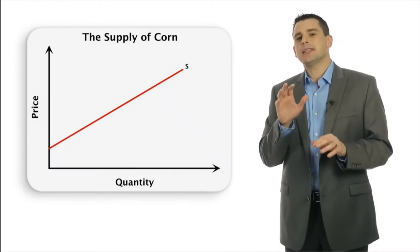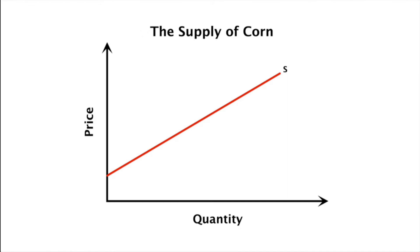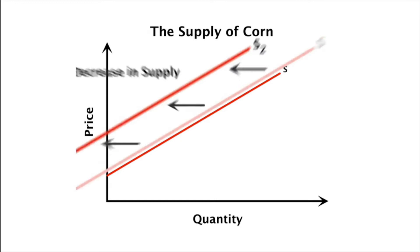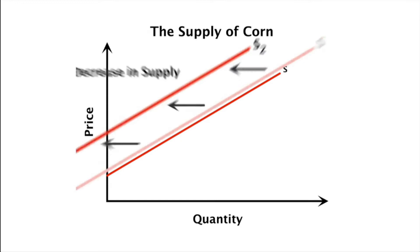The response decreases market supply by reducing available quantities at any price. From our original supply for corn S, we represent this reduction as a leftward shift of the supply curve to S2.